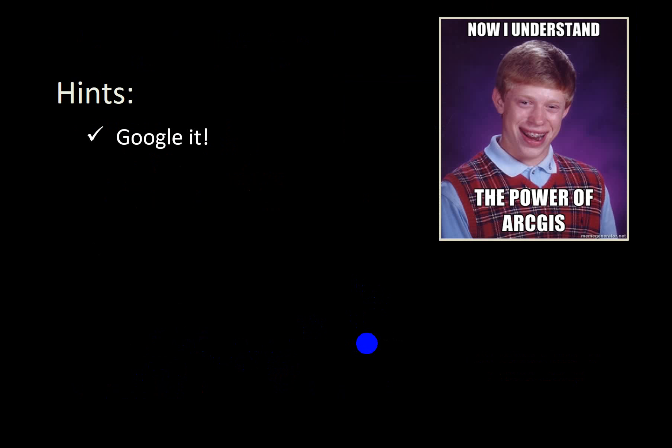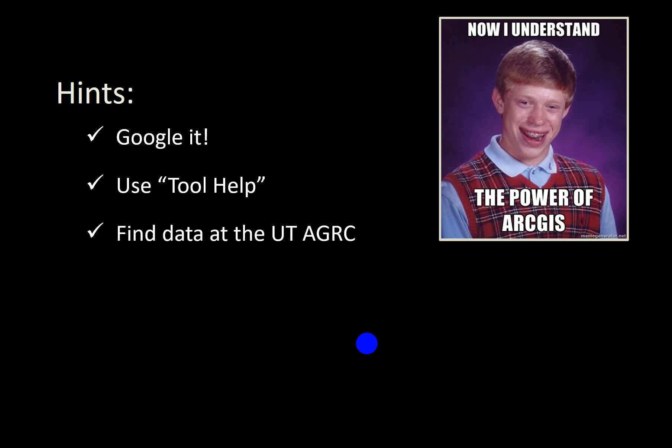Here are a couple of hints. If you get stuck, try Googling it. If you need data, Google it — search for free GIS data with additional search terms that help focus your query. Use the tool help button in every tool, which opens up a help page that defines what the tool does. If you click on the input, output, or any other steps in the tool, it defines what those things are, which is usually very helpful. You can also go to the Utah AGRC and search for data there — that's an easy place to go.